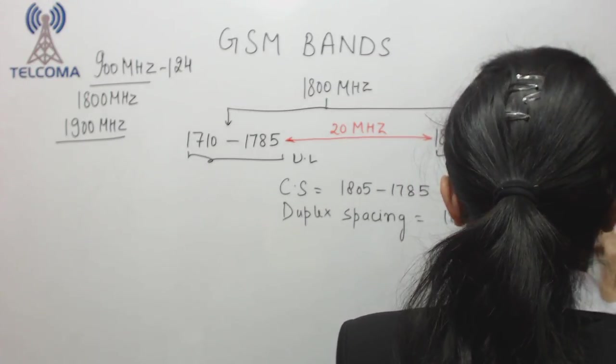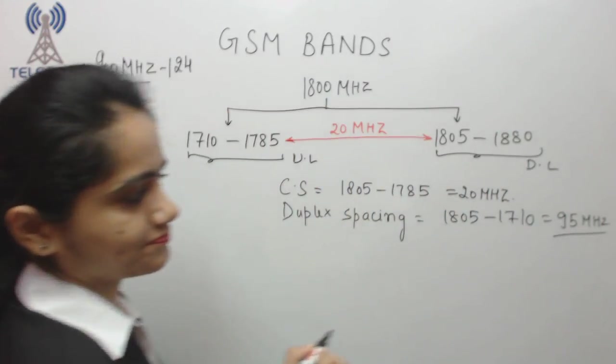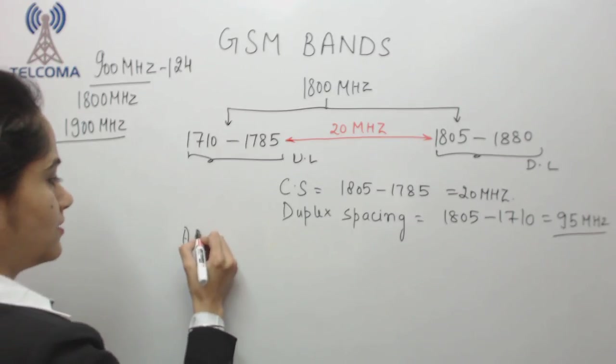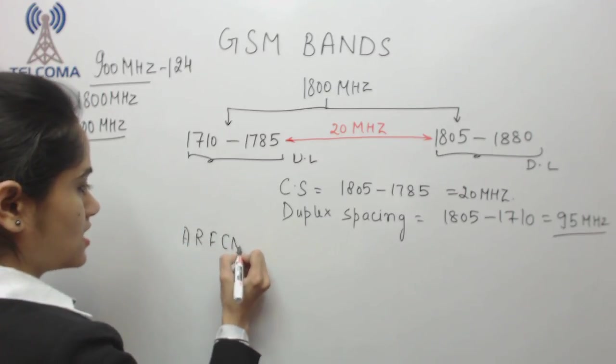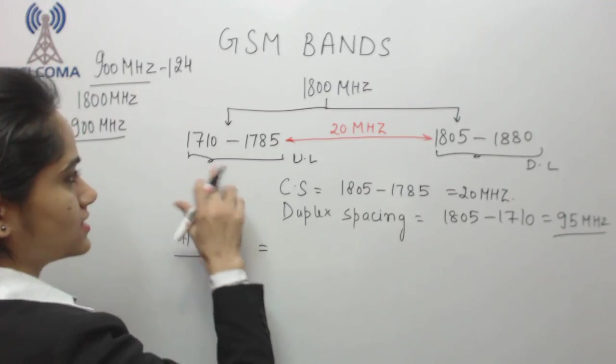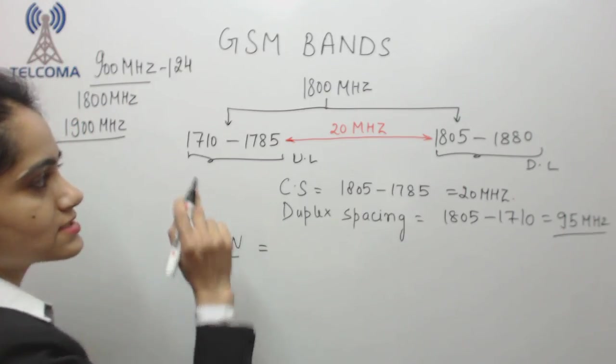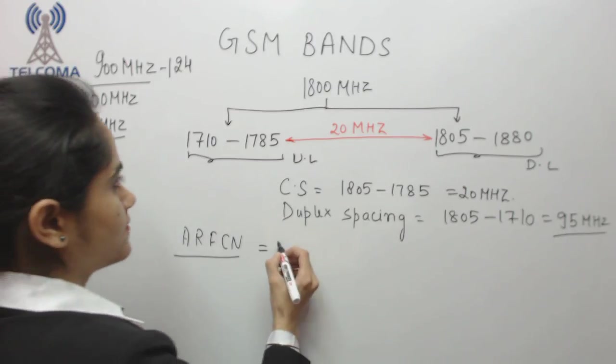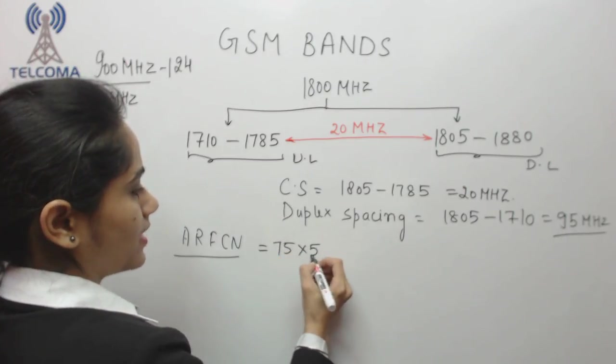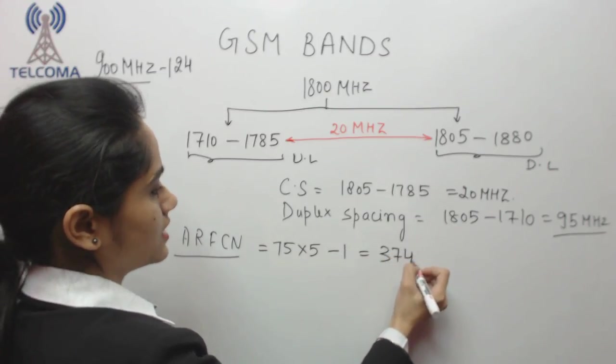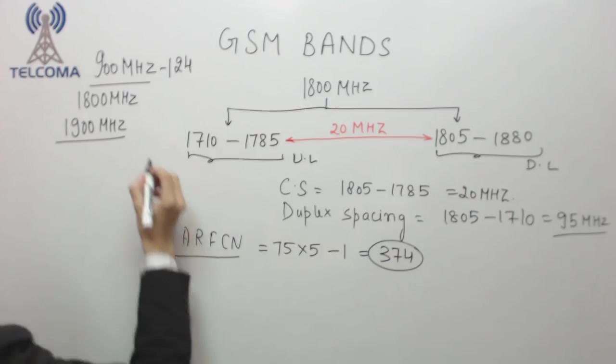Now let's calculate total number of ARFCN. ARFCN is the total difference, so we have 75 multiplied by 5 minus 1, which comes to 374. That means the total number of ARFCN is 374.